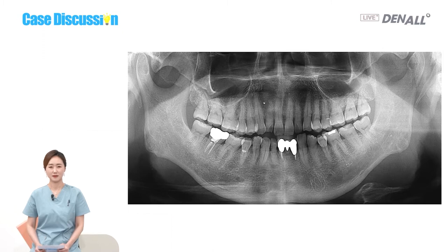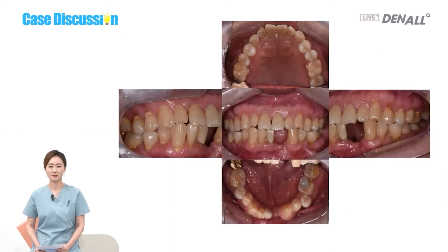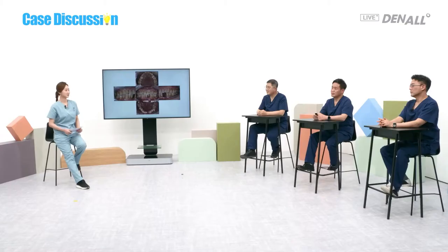If you look at the panorama, there's a three-unit bridge over 41, 31, and 32 in the mandible. Roots are shortened and the bone is resorbed, so it can be mobile. If you look at the clinical pictures, the bridge cut between number 31 and pontic, number 32 and pontic are removed. The lower anterior has narrow bones, so we need to be careful what procedures we will employ and how many implants need to be placed.